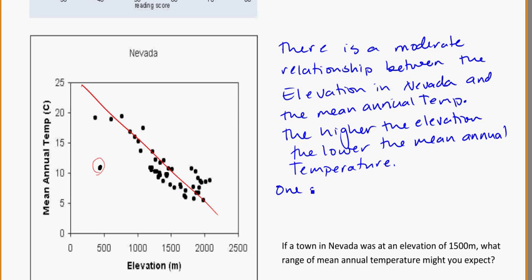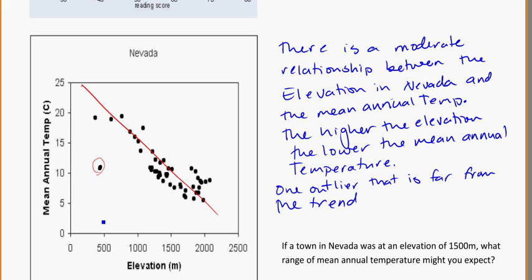There appears to be one outlier that is far from the trend. Let's be specific — tell me which point is the outlier. You can circle it or give me the values. So at roughly 490 meters in elevation and a temperature of 11 degrees Celsius — for areas with similar elevation, it's actually got a much lower temperature.